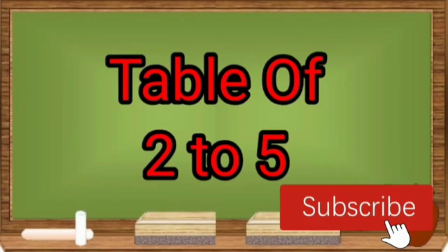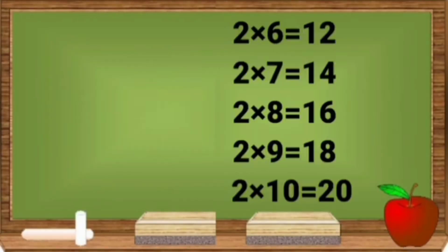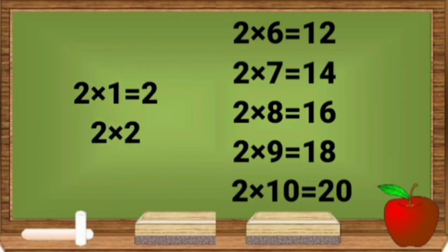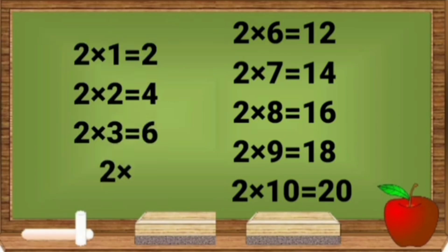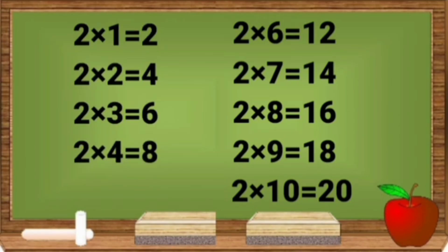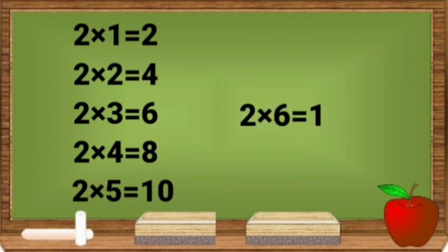Children, now we learn table of 2 to 5. 2 1s are 2. 2 2s are 4. 2 3s are 6. 2 4s are 8. 2 5s are 10. 2 6s are 12.